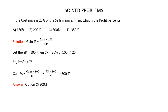The cost price is 25% of the selling price. Since cost price is given as a percentage, let's assume selling price is 100. Then cost price is 25% of 100, which is 25. Profit is 100 minus 25, which is 75. Substituting in the formula, gain percent equals 75 multiplied by 100 divided by 25, which is 300 percent. So the correct answer is option C, 300 percent.